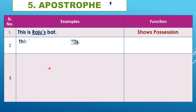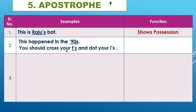Apostrophe is also used with letters and numbers. For example: 'This happened in the 90s' — instead of 1990s, you say the 90s with an apostrophe. Similarly, 'You should cross your T's and dot your I's' — apostrophe is used with individual letters and numbers.